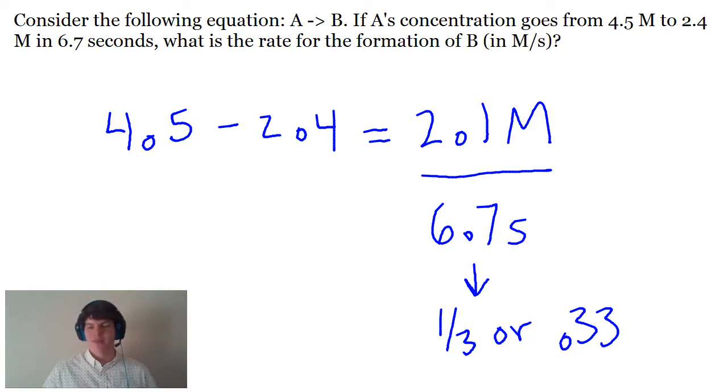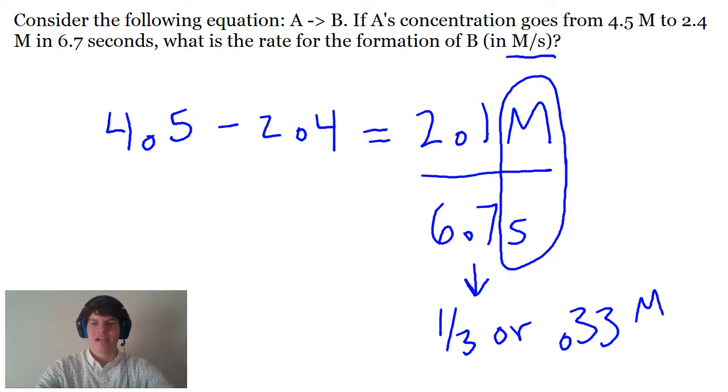Now 0.33 is going to be close enough that I can look at the answer choices and decide which one is the best answer. A great way to double check if we did our math correctly would be to ask ourselves if we ended up with the right units. The units they're asking for are molarity per second. That's what we did. We divided molarity by seconds, thus our final units should be molarity divided by seconds.